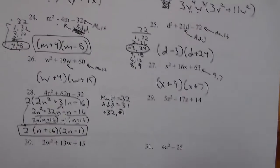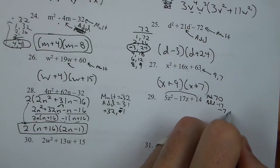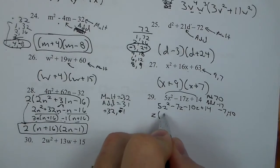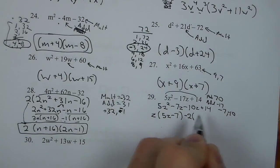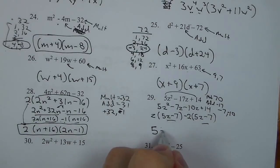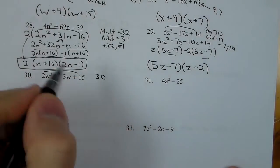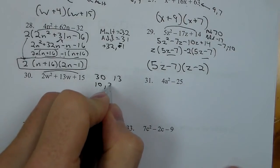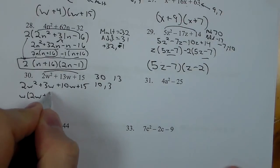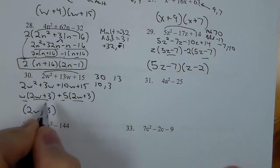Number 29 works the same way. 5 times 14 is 70; it needs to add to negative 17. Negative 7 plus negative 10 works. So we go 5z squared minus 7z minus 10z plus 14. Take out a z: left with 5z minus 7. Take out negative 2: left with 5z minus 7. These match, so we get 5z minus 7 times z minus 2. Number 30: 2 times 15 is 30, needs to add to 13 — that's 10 and 3. So 2w squared plus 3w plus 10w plus 15; factor out w leaving 2w plus 3, factor out 5 leaving 2w plus 3. Answer: 2w plus 3 times w plus 5.